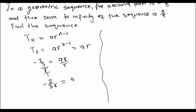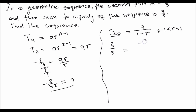We have another equation — the sum to infinity formula, defined as A over 1 minus R. Remember the condition: R must be greater than negative 1 but less than 1. The sum to infinity is 3 over 5. Plugging in the values: 3 over 5 equals A over 1 minus R, where A is negative 2 over 3R, all divided by 1 minus R.